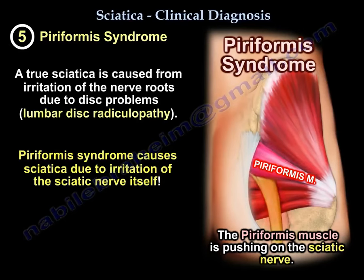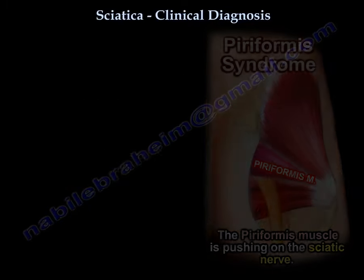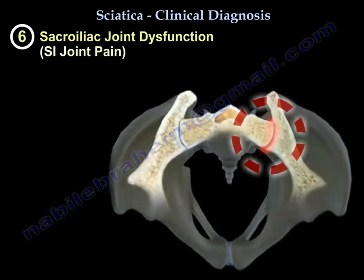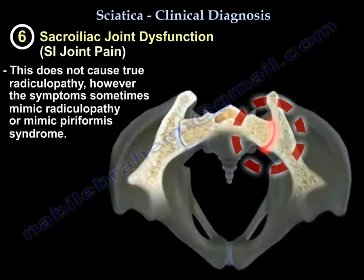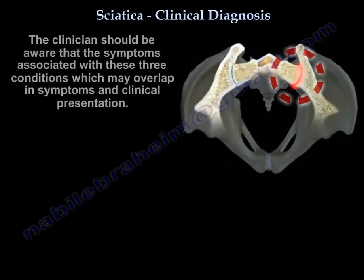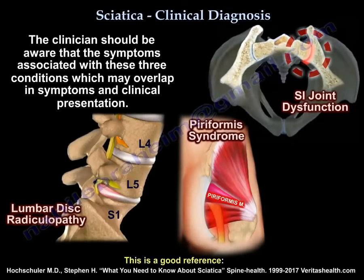The last entity to mention is sacroiliac joint dysfunction. This does not cause true radiculopathy; however, the symptoms sometimes mimic radiculopathy or piriformis syndrome. The clinician should be aware that these three entities can overlap and mimic each other.